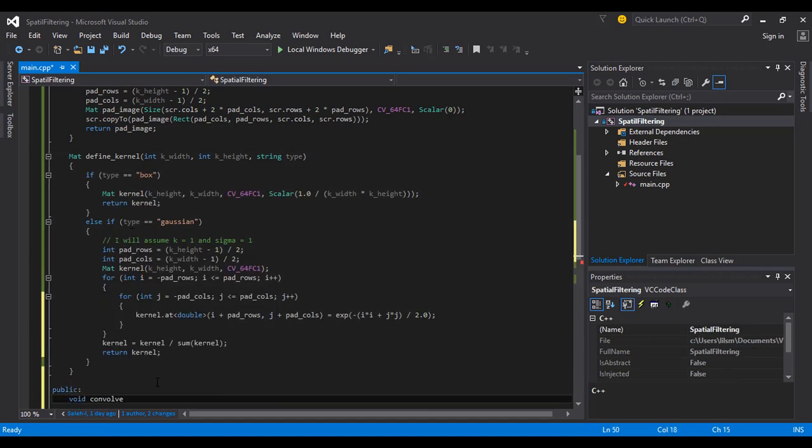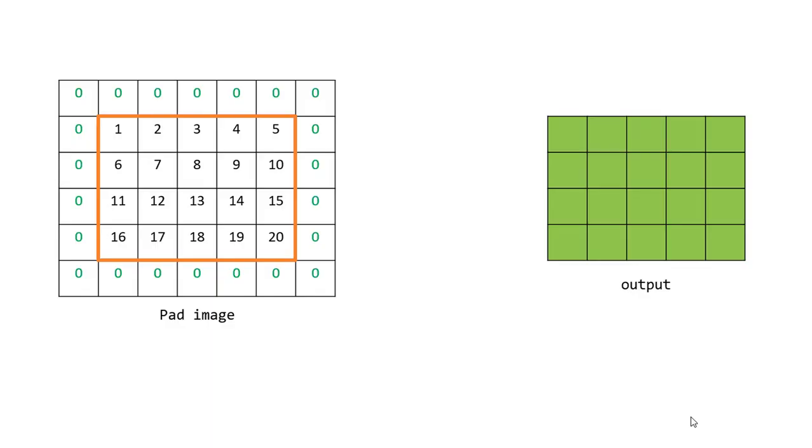Finally, I will define the convolve function. I will initialize the output image. Here I have the padded image, and inside the orange rectangle is the original image. This animation shows the convolution result.